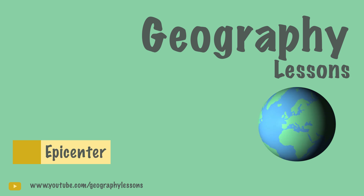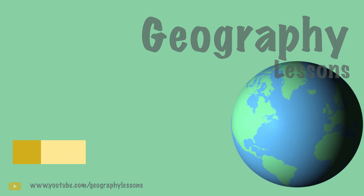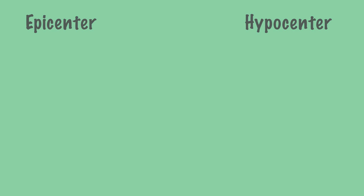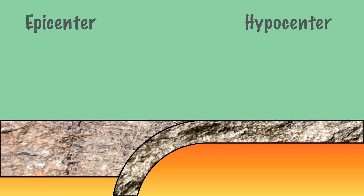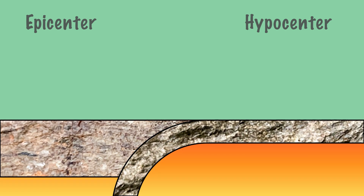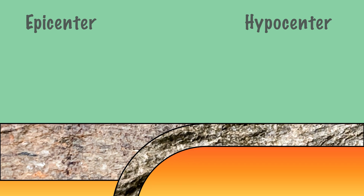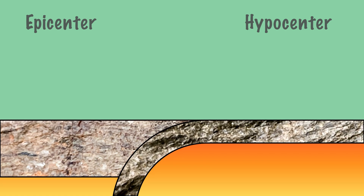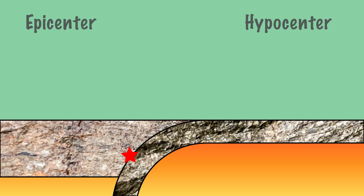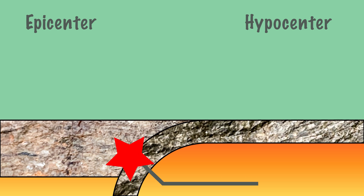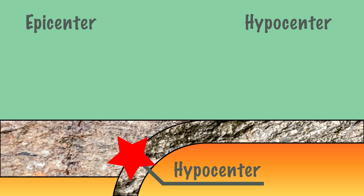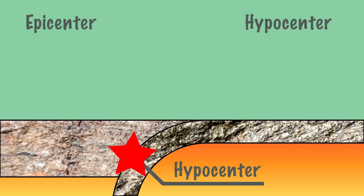When there is an earthquake, often the epicenter and hypocenter are used as the location of the earthquake. But what does this mean and what is the difference? Earthquakes occur regularly when two plates move towards each other. The place in the crust where the rock first moves is called the hypocenter, another word for this being the focus of an earthquake.